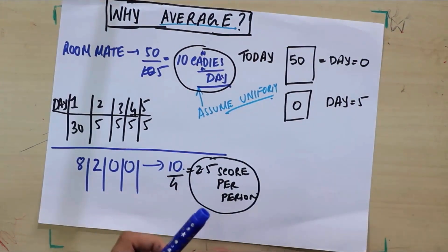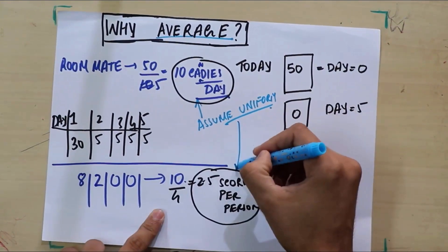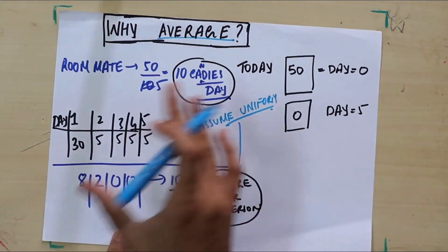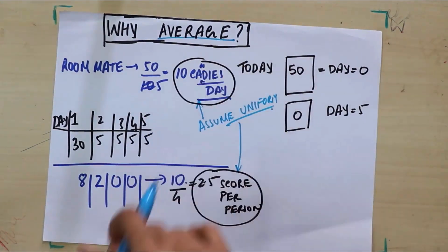Again, we made an intrinsic assumption that everyone got the same score, so we assumed uniformity again. So you see what average value is? When you're calculating something, if you assume that it's uniform, then we call that an average. So it may be or it may not be uniform in general.